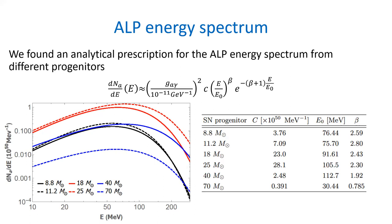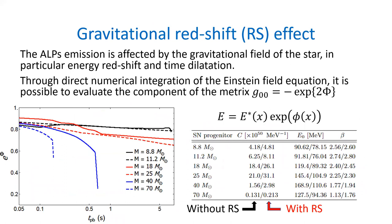Since the spacetime near the core is strongly curved, we need to take into account the effect of gravitational redshift, both on the energy and on time dilation. Since we are integrating over time and are interested only in the energy spectrum, we take into account only the redshift on the energy, expressed by the relation E = E* times an exponential term related to the g_00 component of the metric. We evaluate this metric not analytically, but through direct numerical integration of the Einstein field equations from the simulation itself.